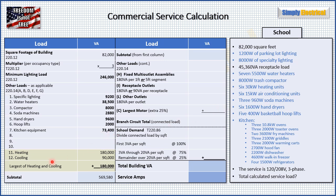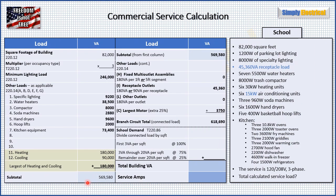Next we get to heating and cooling, which I've pulled into their own section because we need to compare the two. Heating totals 180,000 VA across six heating units; cooling totals 90,000 VA. We take the larger of these two — heating at 180,000 — and add all the bold numbers together. That gives us a subtotal of 569,580 VA, which we carry up to the top of the next column.